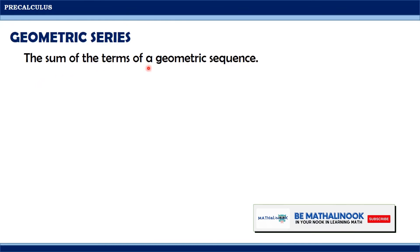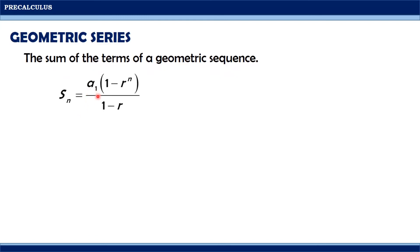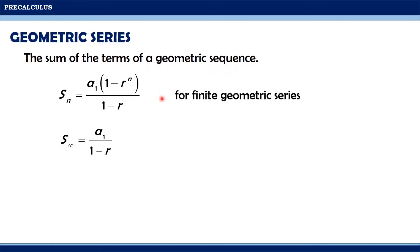Geometric series is the sum of the terms of a geometric sequence. We have two formulas: S sub n equals a sub 1 times the quantity 1 minus r raised to n, all over 1 minus r, and S sub infinity equals a sub 1 all over 1 minus r. The first formula is for finite geometric series, meaning there is a definite number of terms. The second formula is for infinite geometric series, which is the sum of the terms in an infinite geometric sequence.